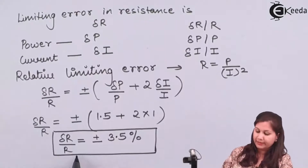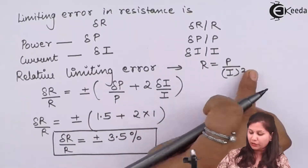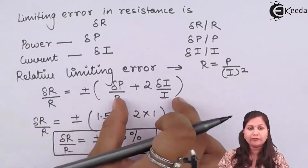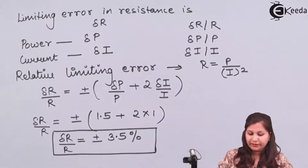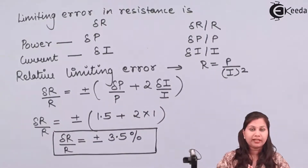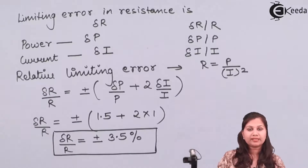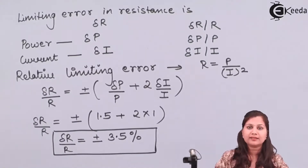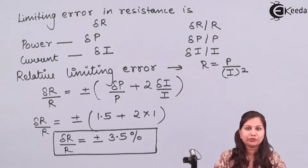We calculated this using the formula R = P / I², and by applying the relative limiting error formula. In this question, we found the limiting error in resistance when resistance is measured with the help of power and the current flowing in the circuit. I hope that this problem is clear to you.